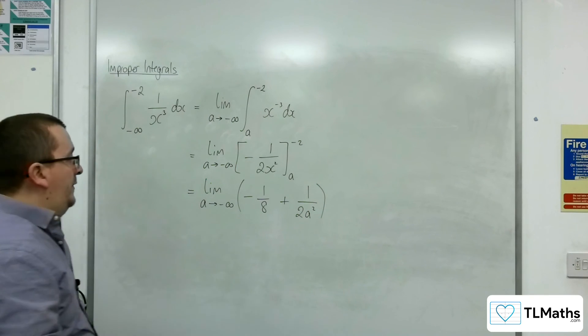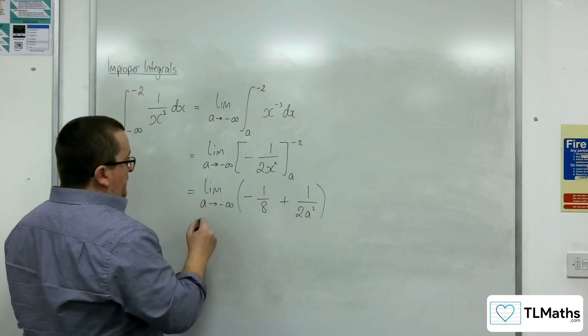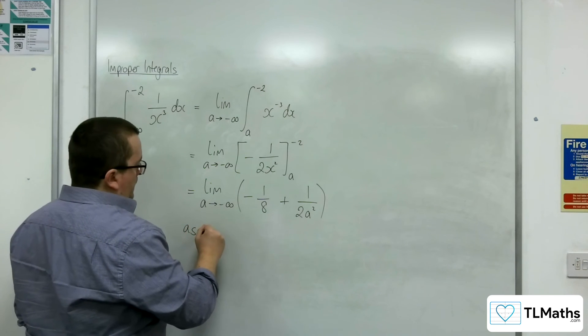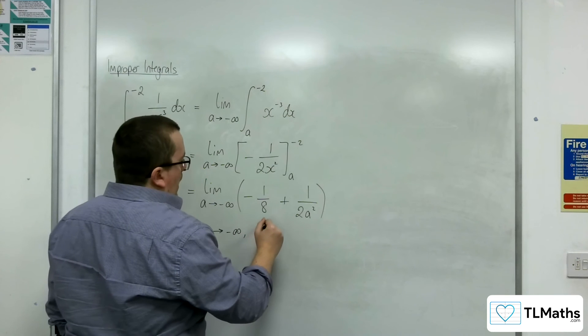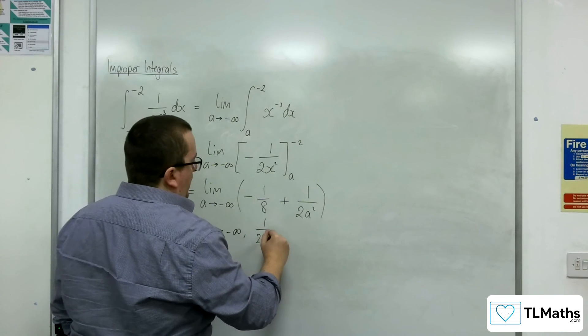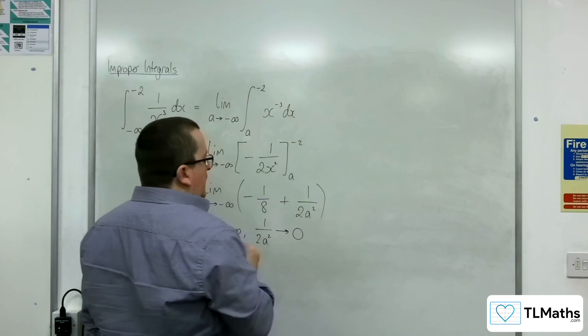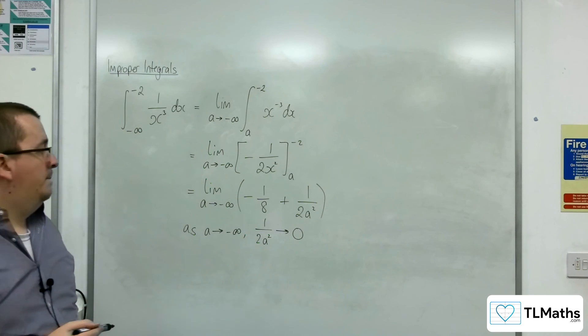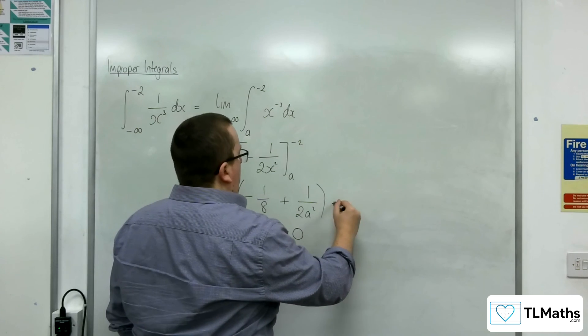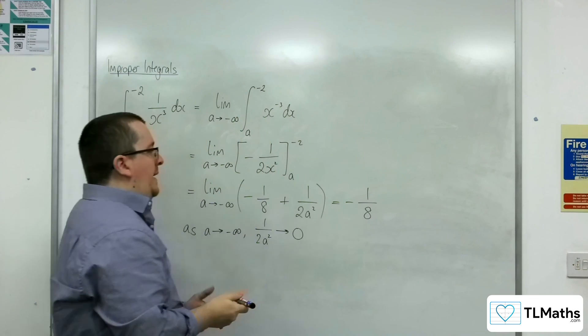Now, as a tends to negative infinity, 1 over 2a squared will tend to 0. That will get smaller and smaller and smaller. So this is actually equal to minus 1 eighth.